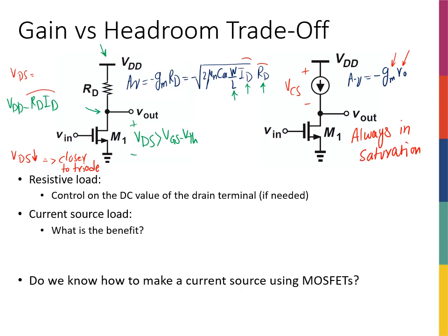However, the big problem comes from this same advantage. Because the voltage across the current source is not dependent on the current, I don't really have control over the DC value of Vout. Most of the time I don't care as long as I'm getting the gain I want, but sometimes I do. If this supply is 1.8 V and the DC output is set to 1.75 V, the output signal gets clipped before reaching 1.8 V — so setting this DC voltage matters. There are other ways to handle this that you'll learn in more advanced courses.